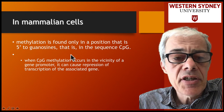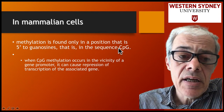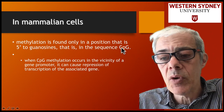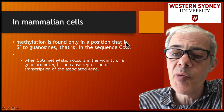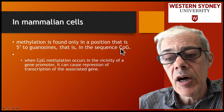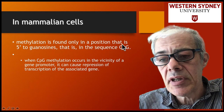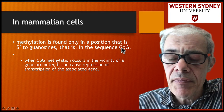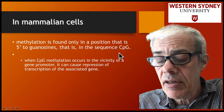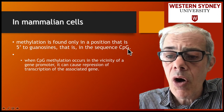Methylation occurs at a cytosine that is five-prime to a guanosine — the sequence CpG, where the p is just the phosphate bond joining the two bases. There are proteins in the cell that recognize this simple CG sequence and can methylate that cytosine. When there are multiple copies of CG, it's called a CpG island, and these are often found within the promoters of tumor suppressor genes.